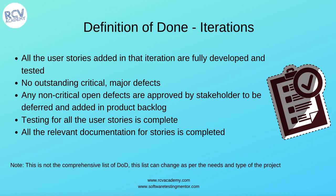Any relevant documentation for the user stories must be completed, as these are the deliverables for the user story. For example, if you have picked a user story or an epic for which a design document is required, you need that documentation. Test cases, if required, need to be documented and added into the execution cycle, with execution done in the tool. After test execution, you should be able to produce a test report for the execution.